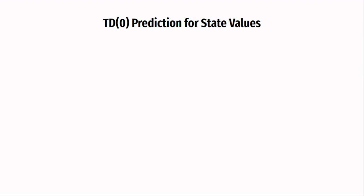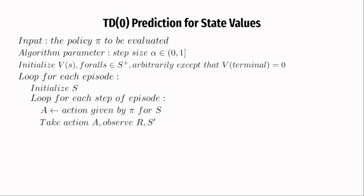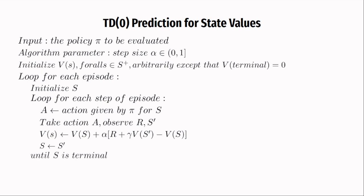The TD policy evaluation algorithm for the state value function works as follows. We have a policy to evaluate, initialize step size alpha, and initialize values for all states arbitrarily except the terminal state which is set to zero. For each episode, initialize a state, then for each step take an action given by the policy, observe reward R and next state S', perform the one-step TD update to the values of this state, and make the next state the current state, looping until S is the terminal state. This algorithm is very simple and easy to implement because it uses one-step TD updates.